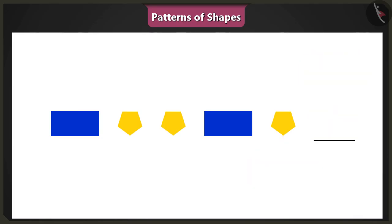Oh, wait, look carefully. In this pattern, one rectangle is followed by two pentagons and we need to repeat this pattern. Right. So, the next shape in this pattern will be a pentagon. This way we get a pattern of one rectangle and two pentagons.